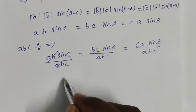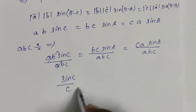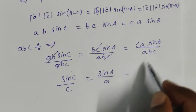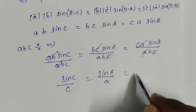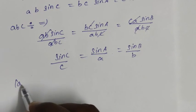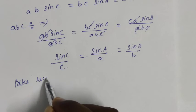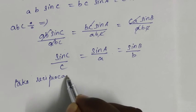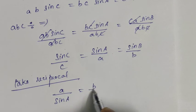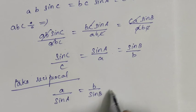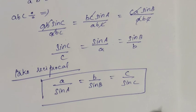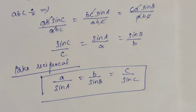Taking reciprocals, we get a/sin A = b/sin B = c/sin C. This is easy to prove, so do it. Thank you.